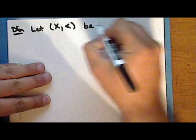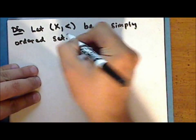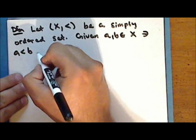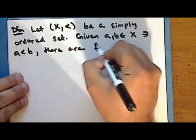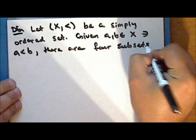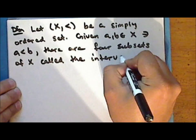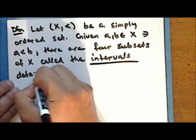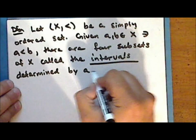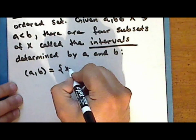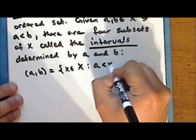New definition. Let the set X together with the relation less than be a simply ordered set. Given two elements a and b in the set X such that a is less than b, there are four subsets of the set X called the intervals determined by the elements a and b. What we call the open interval from a to b, which is the set of all those elements x in the set X such that a is strictly less than x and x is strictly less than b.